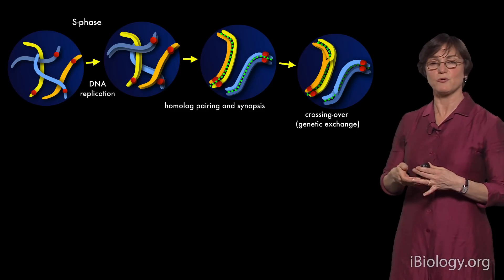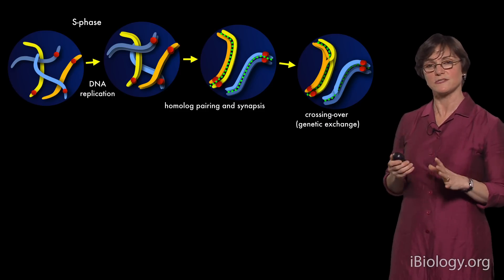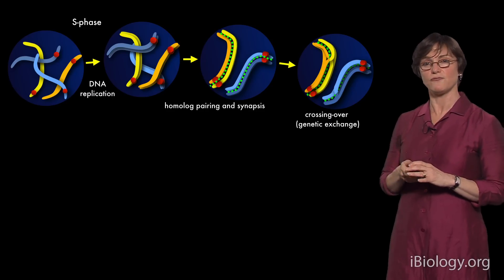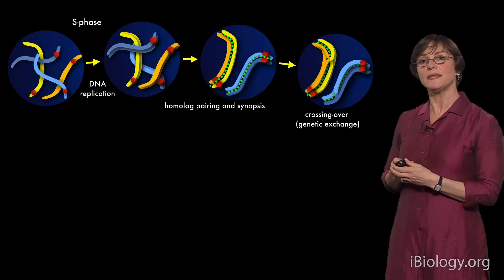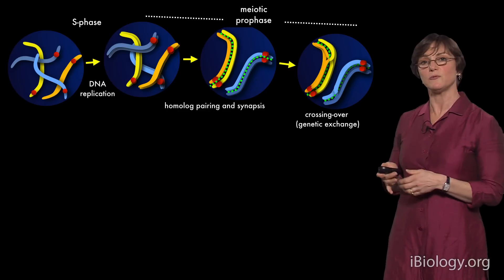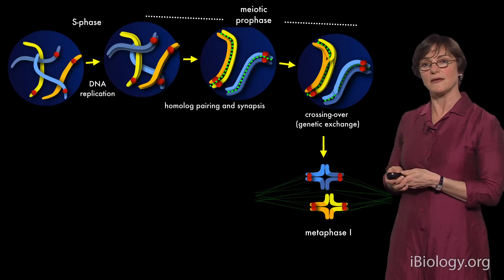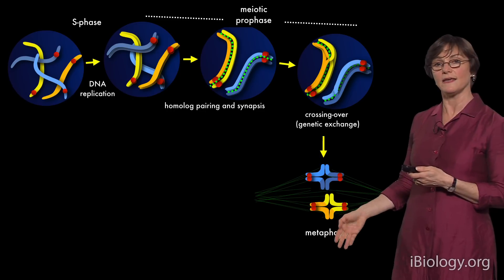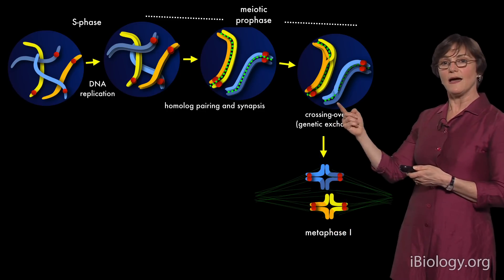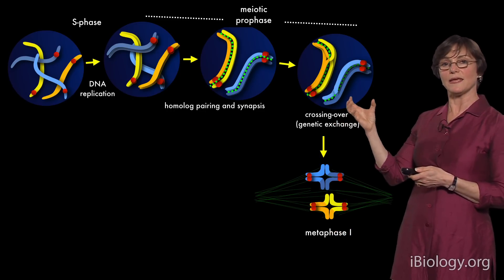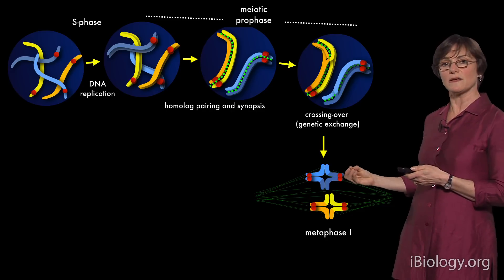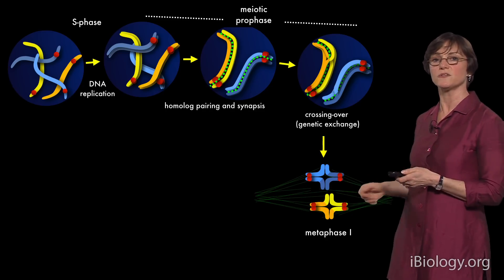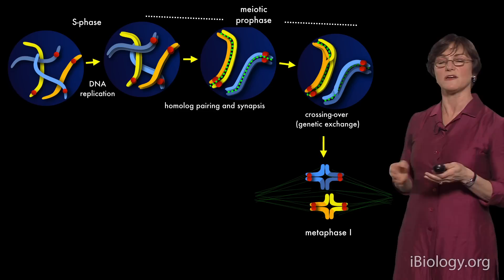Because this recombination process is so central to meiosis, it is also physically essential. Recombination is necessary to create the link between chromosomes that enables them to stay together until division. By forming a crossover and being held together by cohesion, the two homologous chromosomes can bi-orient — facing the two poles of the meiotic spindle — and segregate towards opposite poles.